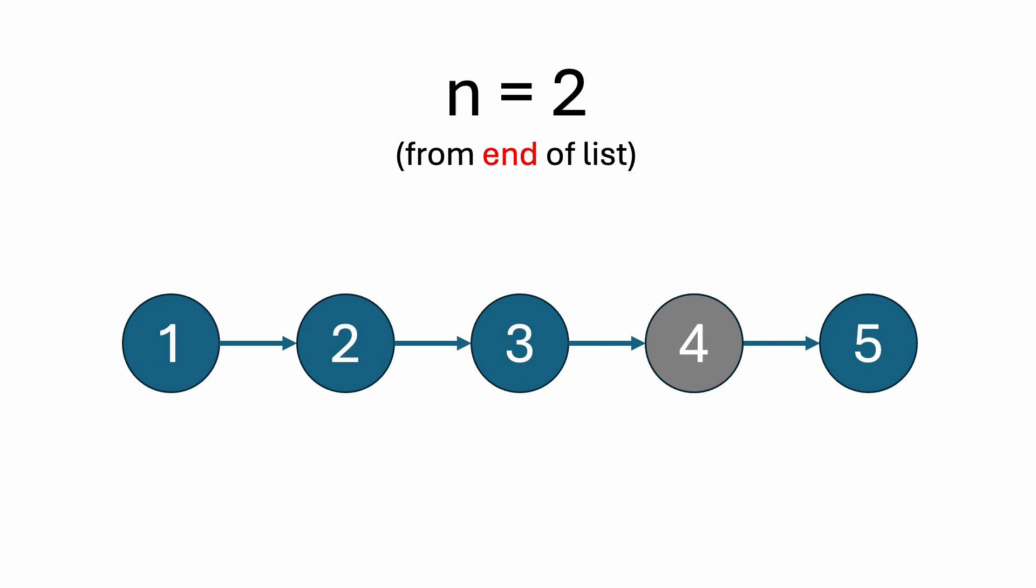So the way we can solve this problem is by using two pointers. The first pointer will get a head start of n nodes, so in this case, we'll move the blue pointer two nodes ahead. Then we'll move up both pointers until the blue one reaches the end, and as you can see, since the orange pointer started two nodes behind the blue one, once the blue pointer reaches the end, the orange pointer is now perfectly positioned right before the second node from the end of the linked list, and we can make node 3 point straight to node 5.